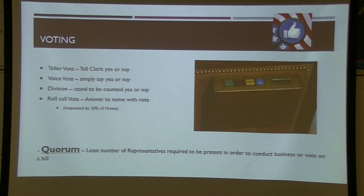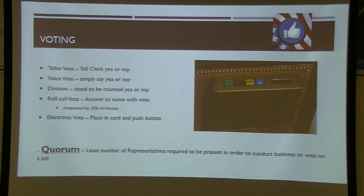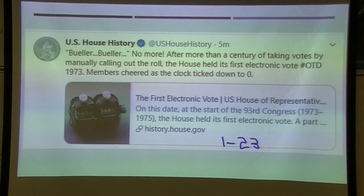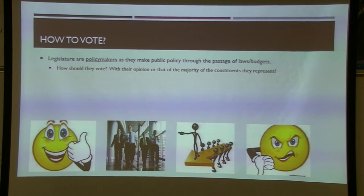Since the 1970s, most voting is done electronically — members use a card to vote yay, nay, or present. Voting 'present' happens when a member doesn't want to vote either way — perhaps it's controversial or they need to recuse themselves for personal reasons — but they don't want to be marked absent. If you're running for reelection, missing 47 out of the last 200 votes is a negative.